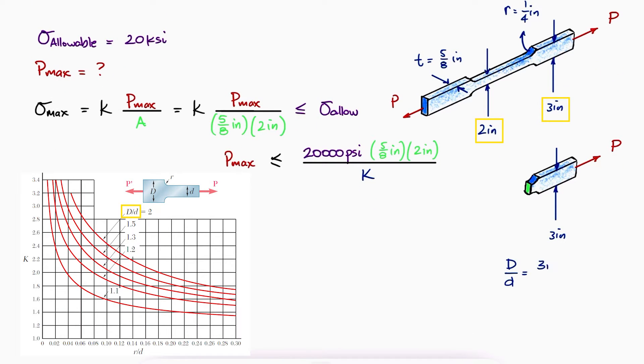For a widths ratio D over d of 1.5 and a fillet radius over the smaller width of 2 inches, which yields an x-axis value of 0.125, we find the stress concentration factor just below 2.1.